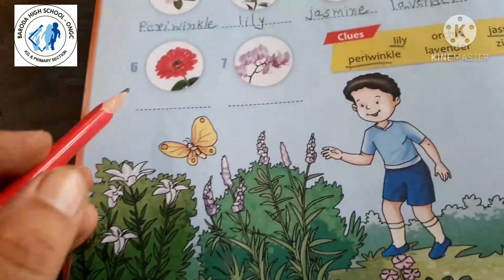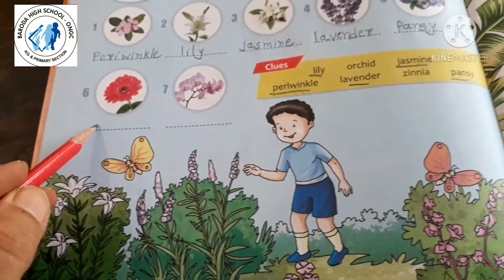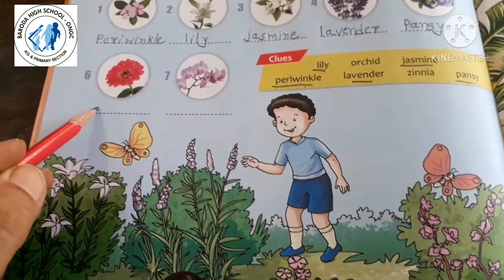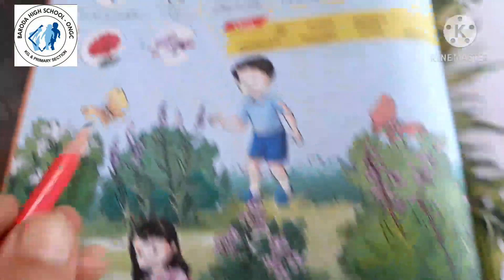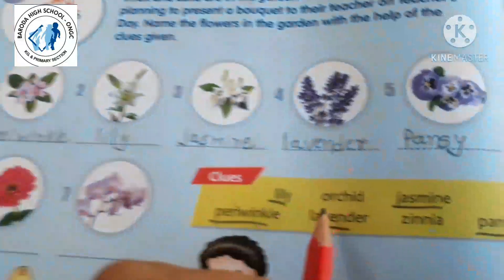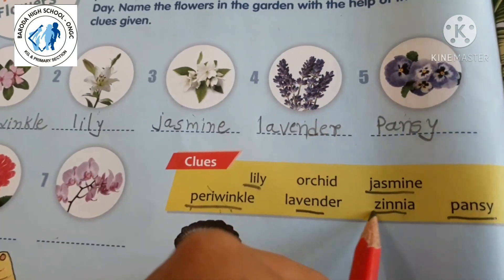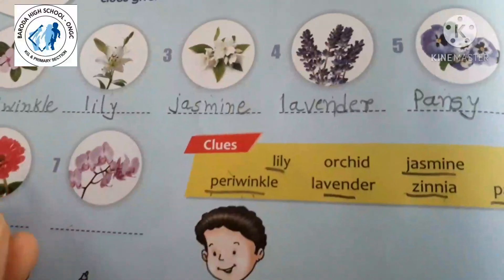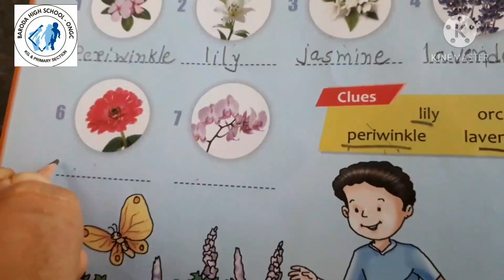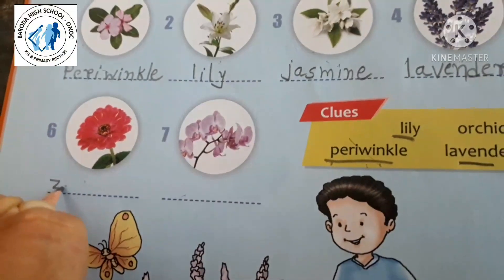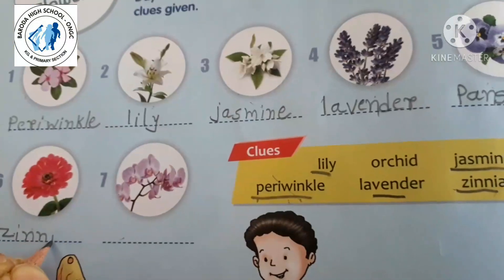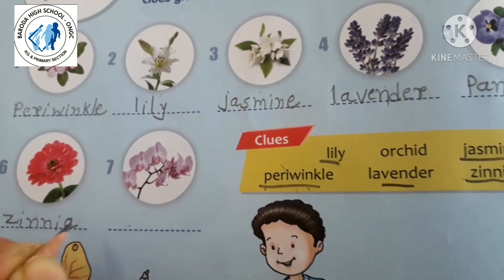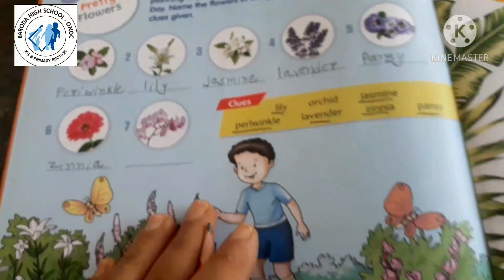Now see here — what is this? This is zinnia. Where is zinnia? See, this is zinnia — here and here. Zinnia.